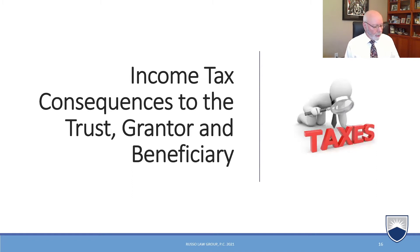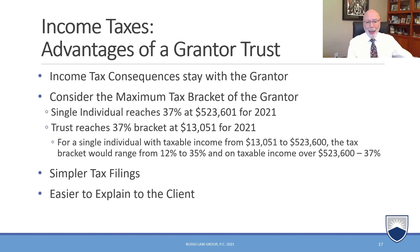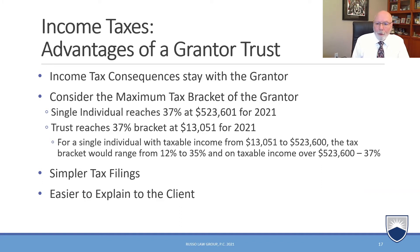Now let's talk about the income tax consequences — whether the trust has to report income, the beneficiary does, or some combination. We've touched on how we make it a grantor trust to push it all back to the grantor. The advantage of a grantor trust is that the income tax consequences stay with the grantor. Considering the maximum tax bracket — a single person reaching 37% at $523,000 plus, while the trust reaches that bracket at $13,000 plus — it's clear that pushing that income back to the grantor is the preference.